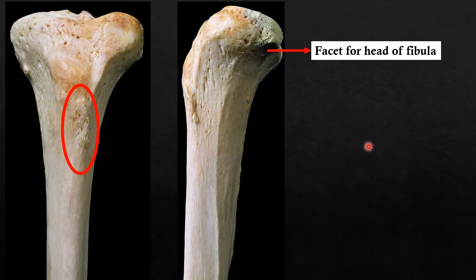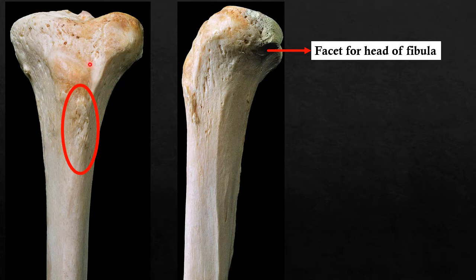The first bone we discussed was the femur, and in this class we are going to discuss about the tibia, fibula, and articulated foot. Here I have taken the left-sided tibia. To identify it, the first and foremost thing is anatomical position. In the upper end of the tibia we can identify a bony projection called the tibial tuberosity, which faces anteriorly. In the lower end we have a projection called the medial malleolus, also called the tibial malleolus, which must be present medially.